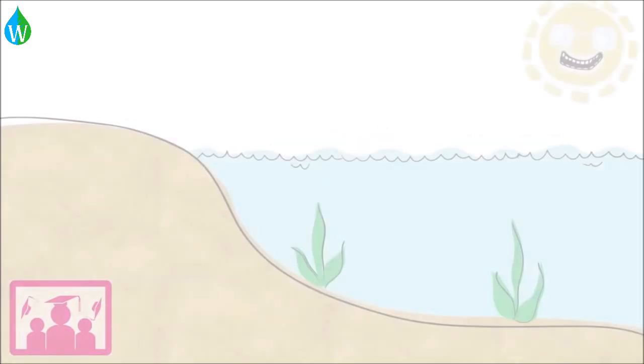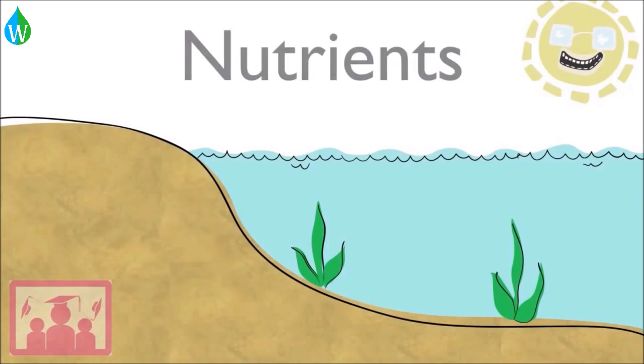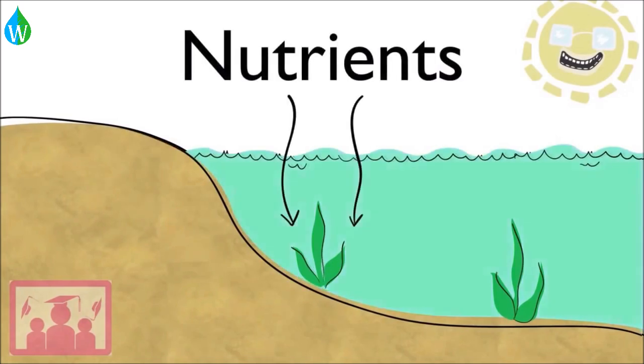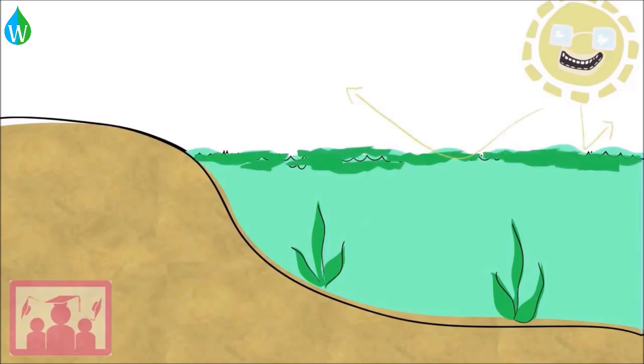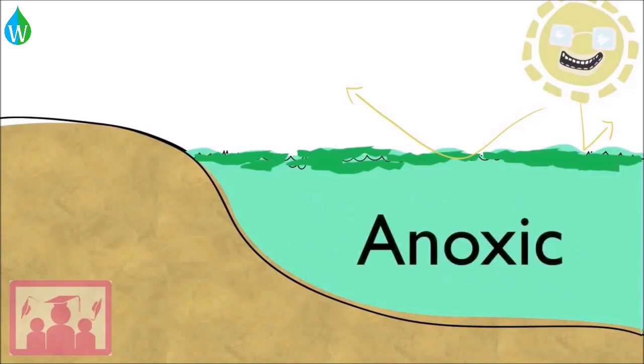So, eutrophication happens when nutrients are added to water, which causes an algal bloom, cutting off sunlight and feeding bacteria. The bacteria use up oxygen in the water, which becomes anoxic, causing everything living in the water to die.